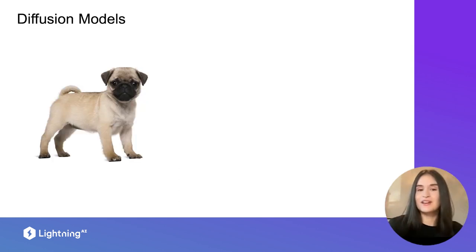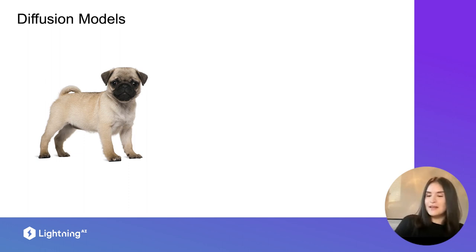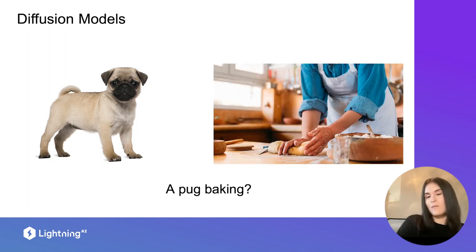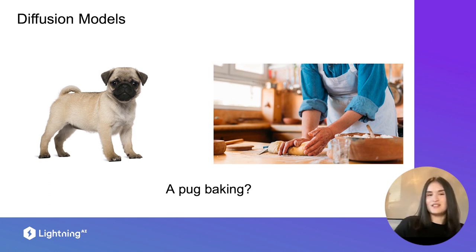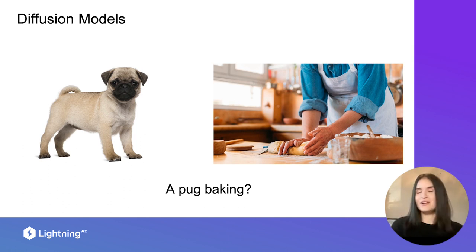To start, I'm going to ask you to think about an animal. I'm going to think about a book. Then I'm going to ask you to think about an activity — I want to think about baking because I like baking. And I'm going to ask all of you to imagine a book baking. I'm pretty sure all of you can do this — you have this imagination of a little book with paws playing. It's really cool.